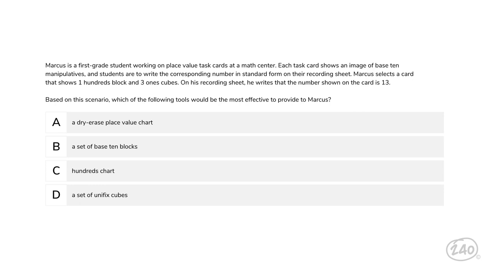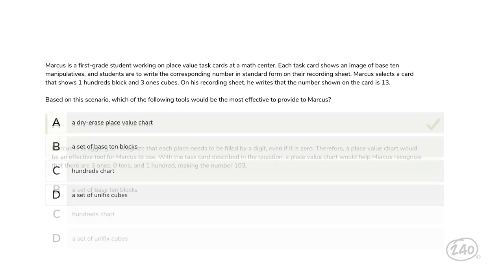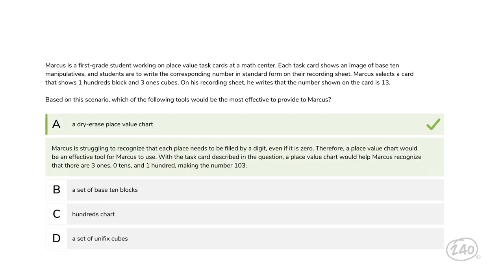Marcus is struggling to recognize that each place needs to be filled by a digit, even if it is zero. Therefore, a place value chart would be an effective tool for Marcus to use. With the task card described in the question, a place value chart would help Marcus recognize that there are three ones, zero tens, and one hundred, making the number 103. How'd you do with that one? Personally, I could do without this.